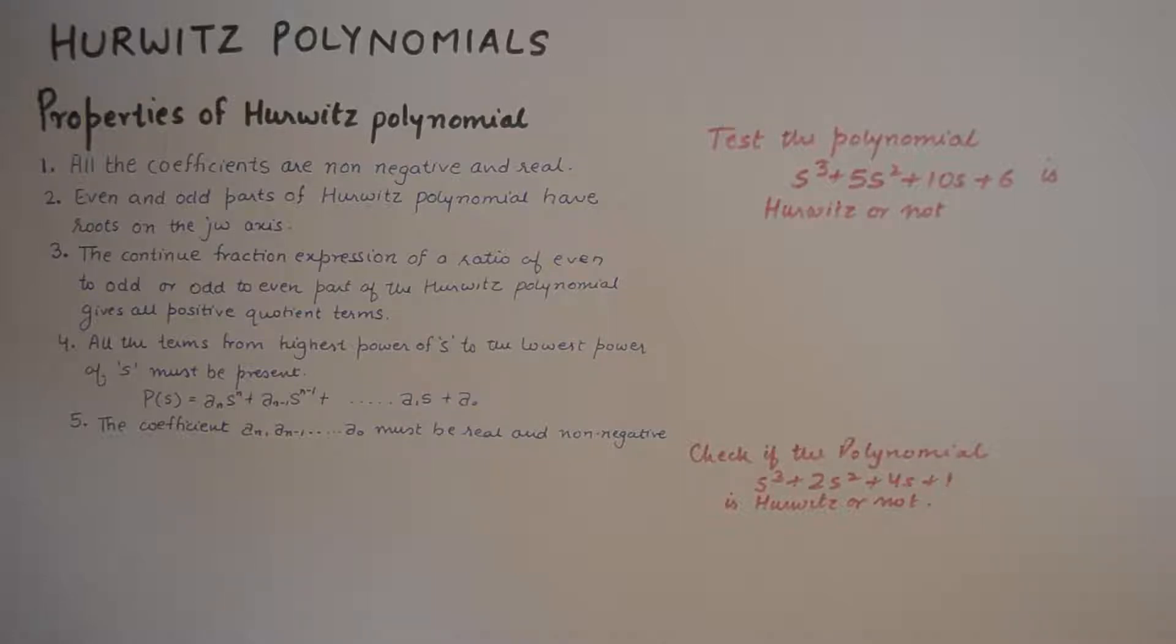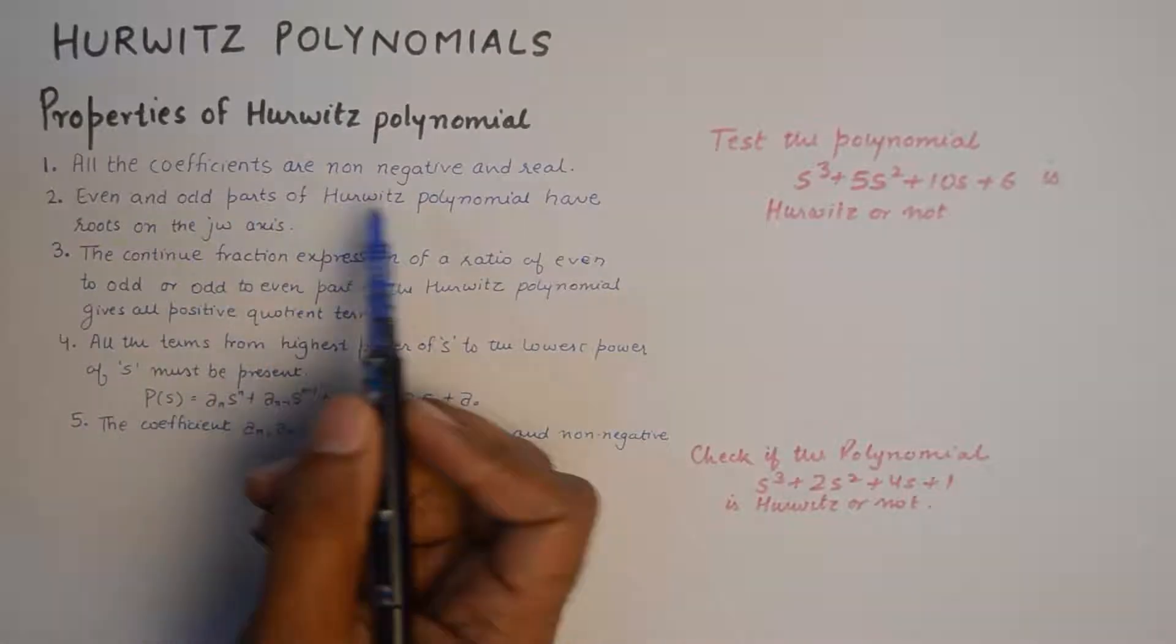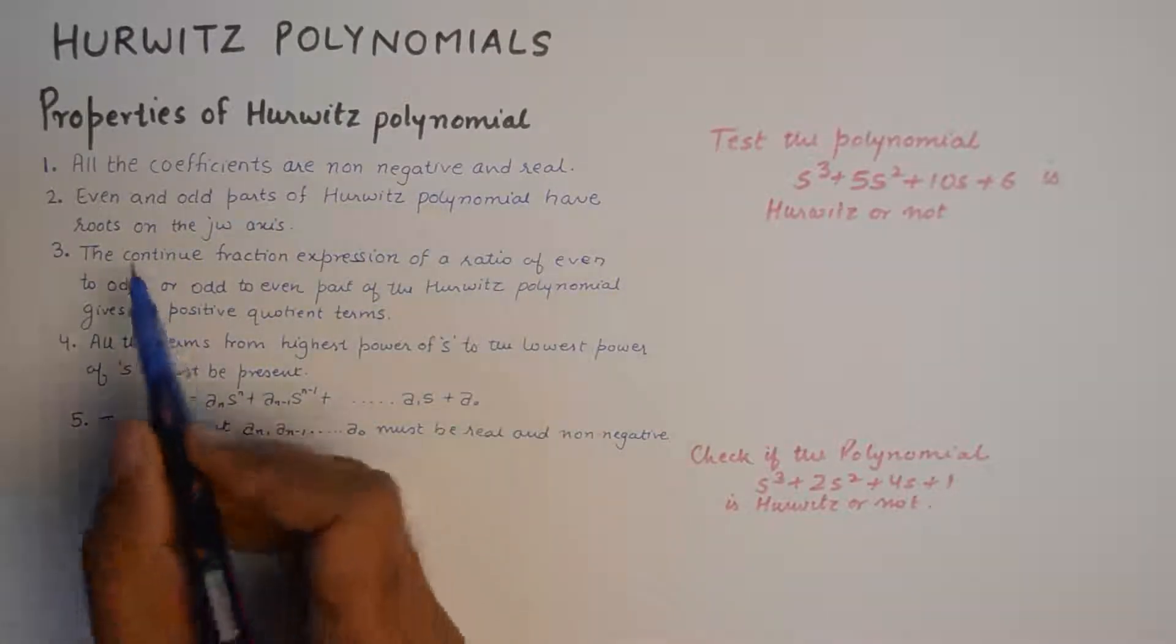So in this tutorial we'll talk about Hurwitz polynomial, and in the next tutorial I'll talk about PRFs, which is positive real function. Now there are many testing procedures to check if a polynomial is a Hurwitz polynomial or not. I've written on the properties of Hurwitz polynomial and I'll show you some examples where we are going to test the polynomial for if it is Hurwitz or not.